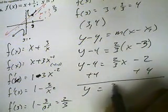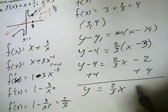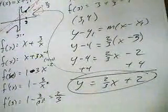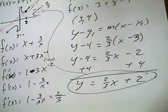We get y equals 2 thirds x plus 2. That is the equation of the tangent line.